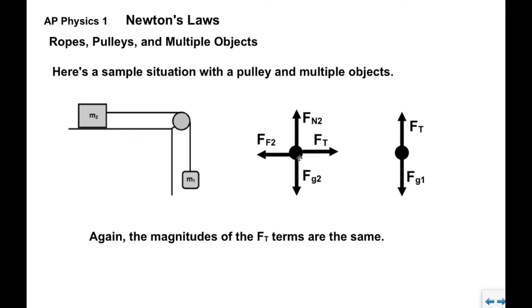When we look at M2, the rope is horizontal when it attaches to M2. So we've got Ft pulling to the right. It's on the surface, so we've got Fn and Ff associated with object 2, and then we've got Fg2 pulling down as we usually do.